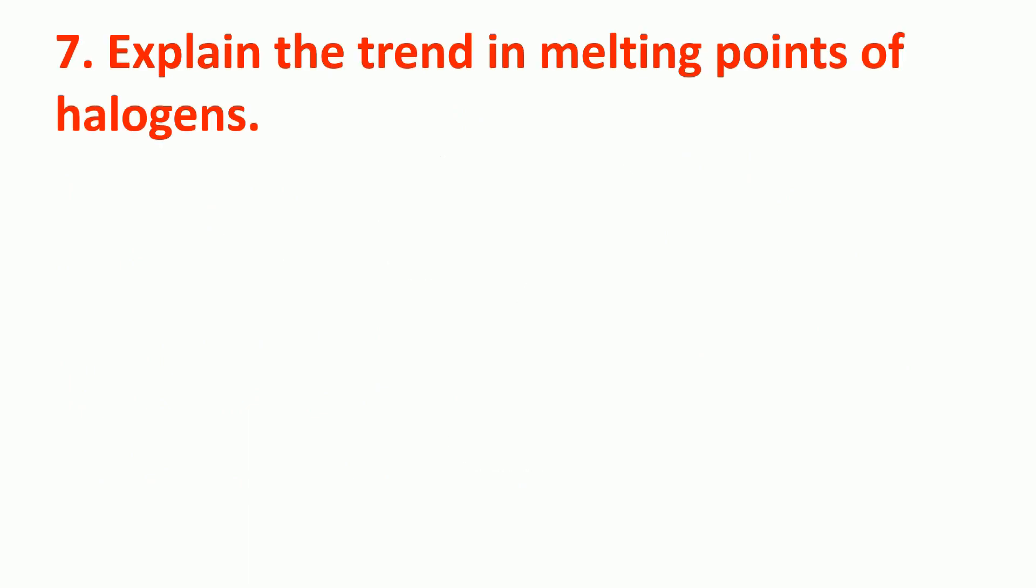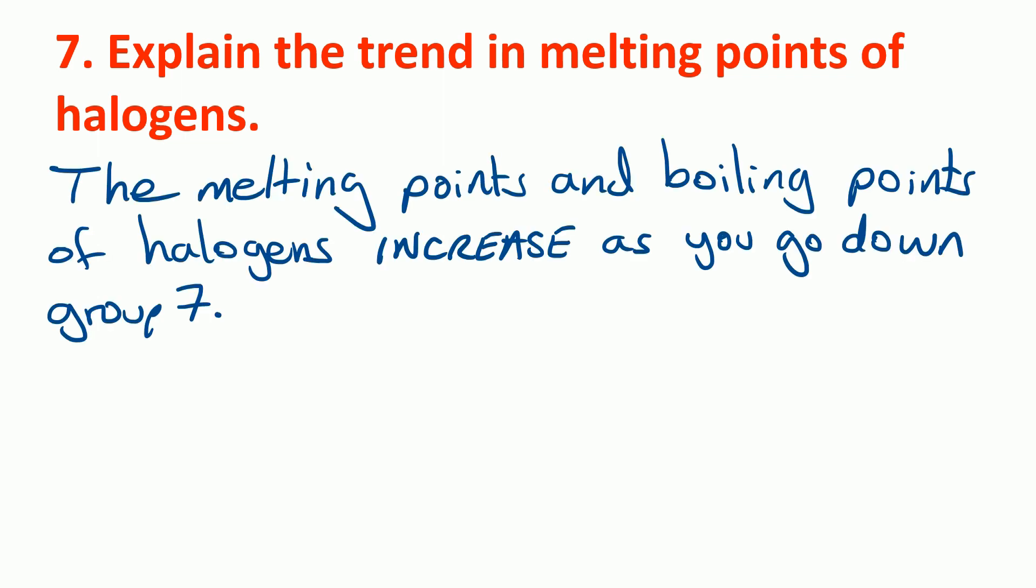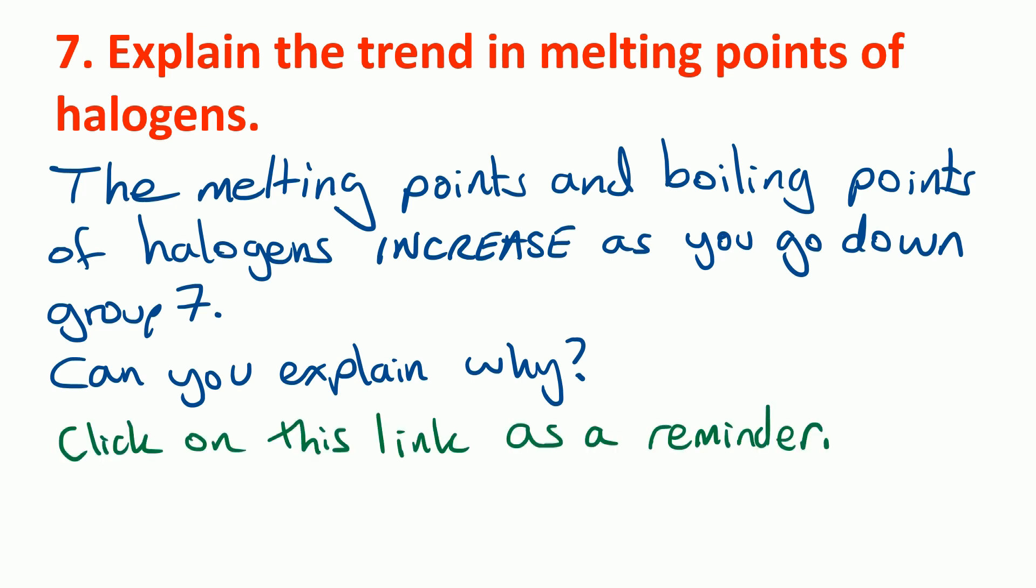At number 7 we have, explain the trend in melting points of the halogens. So the melting points and boiling points of halogens increase as you go down group 7. But can you explain why? If you need a reminder, I'll put a link up here now to one of my previous videos explaining this.